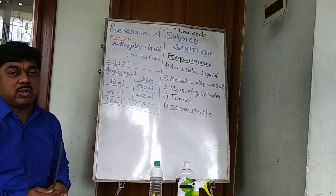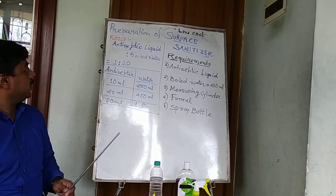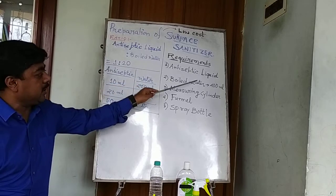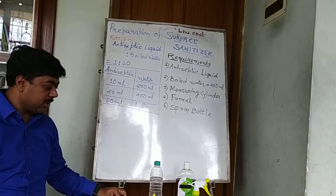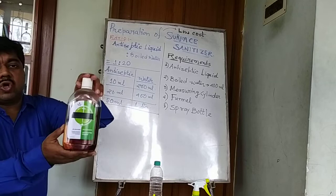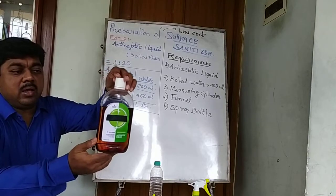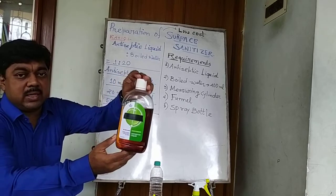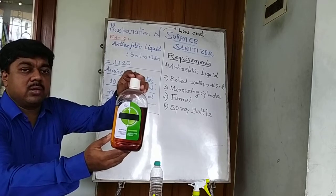Surface sanitizers may be non-alcoholic and are used to sanitize surfaces, especially after cleaning the dirty water of a flood. Now let us proceed to know how we make surface sanitizers. The first requirement is an antiseptic liquid — a medicated disinfectant — which is available in medicine shops.